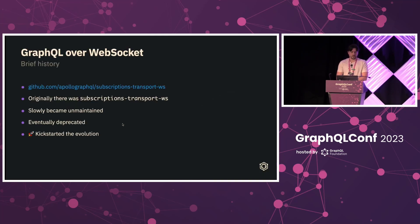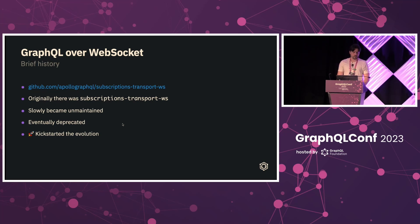Before we continue, a brief overview of the history. Originally there was a library called Subscriptions Transport WS that was built and maintained by Apollo. It had an accompanying protocol, but as time passed, they spent less and less time on it, very likely due to increased demand on other areas. The repo grew, PRs were never reviewed, it eventually became unmaintained, and today it's officially deprecated. But this library actually kick-started and pushed the evolution — it was a big inspiration and of great influence to the upcoming refresh.